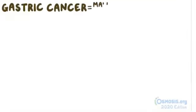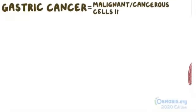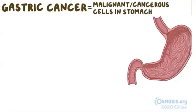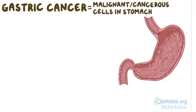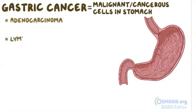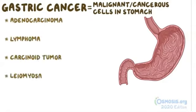Gastric cancer is when malignant or cancerous cells arise in the stomach. This cancer can appear in any part of the stomach, and it's classified into adenocarcinoma, lymphoma, carcinoid tumor, and leiomyosarcoma, depending on the types of cells it originates from.